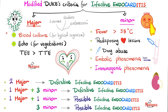Modified Duke's criteria: major criteria are positive blood culture and positive echo finding for vegetations on the valves. Minor criteria are fever, predisposing lesion, IV drug abuse, embolic phenomena, or immunological phenomena. To definitively diagnose infective endocarditis, you need two major criteria, or one major plus three minor.